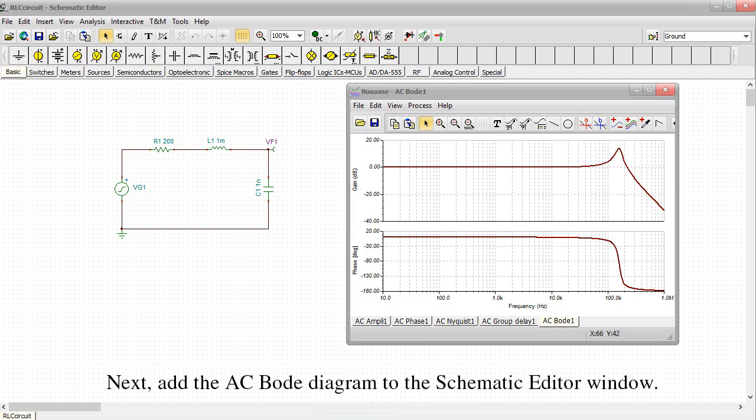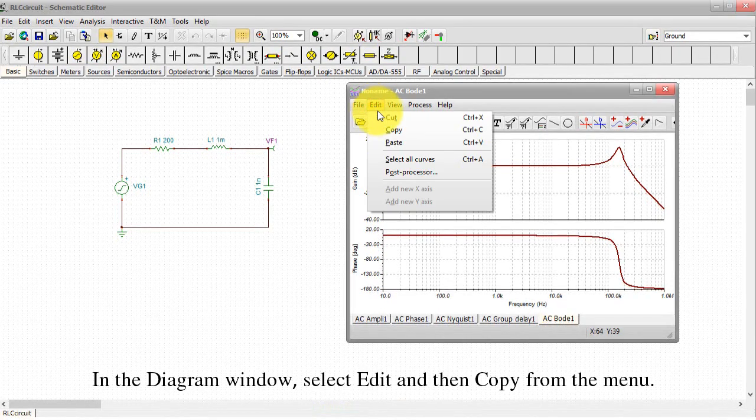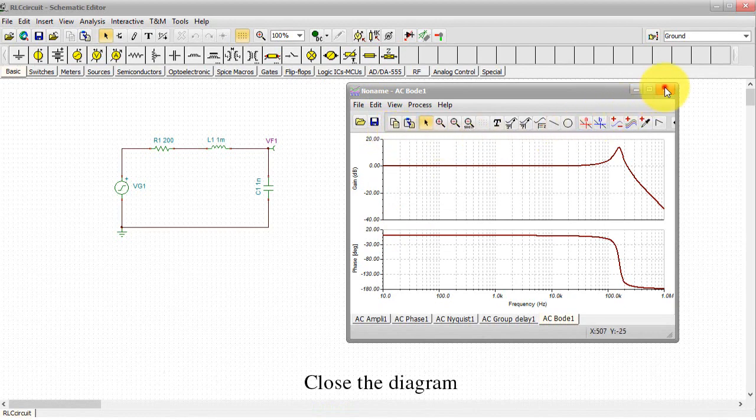Next, add the AC Bode Diagram to the Schematic Editor window. In the Diagram window, select Edit and then Copy from the menu. Close the diagram.